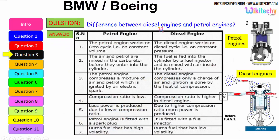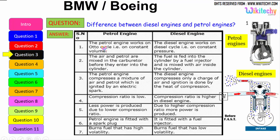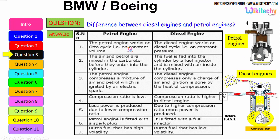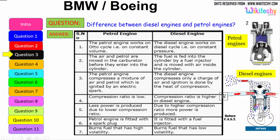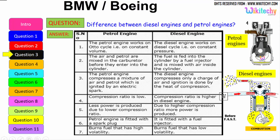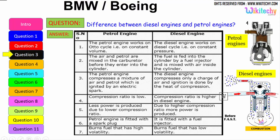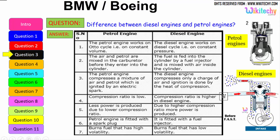The difference between a diesel engine and a petrol engine: the petrol engine works on the Otto cycle, therefore on constant volume, whereas the diesel engine works on the diesel cycle, on constant pressure. The air and petrol are mixed in the carburetor before they enter the cylinder, whereas in a diesel engine the fuel is fed into the cylinder by a fuel injector and is mixed with air inside the cylinder.